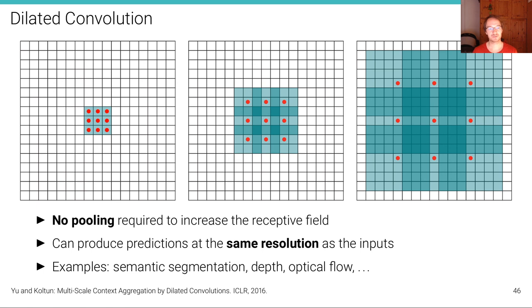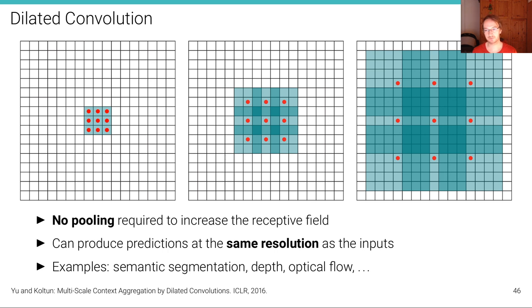Here is another illustration showing how the receptive field progressively grows. In the first stage, second stage, and third stage, you can see the receptive field size increasing. Examples where dilated convolutions can be applied include semantic segmentation, depth estimation, and optical flow.